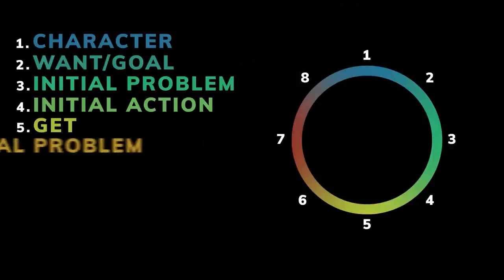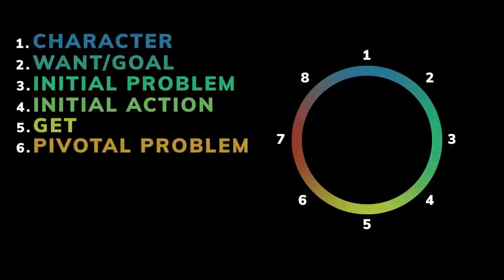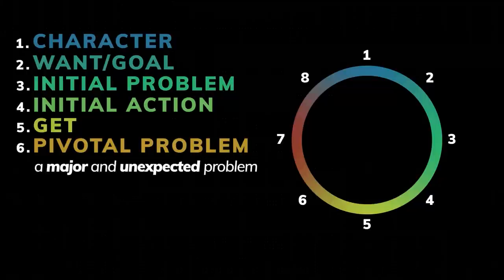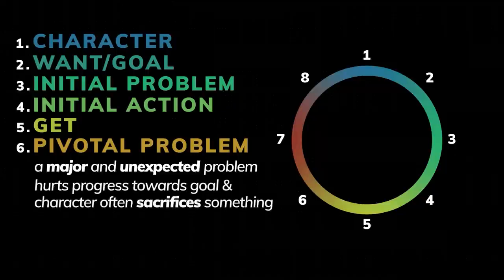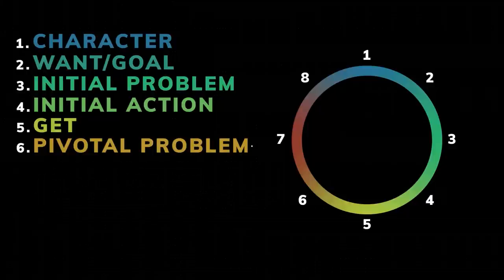Now the six is a hugely important piece of this process. This is usually the piece that will put your audience on the edge of their seats. A major pivotal problem happens that your character did not expect. This is going to radically hurt the progress they have made so far. Your character may also be forced to sacrifice something at this point. There was something they didn't prepare for, and it wrecks their plan. Just like the three, this is a serious problem, and it should be a larger problem than the three.